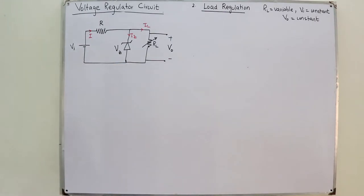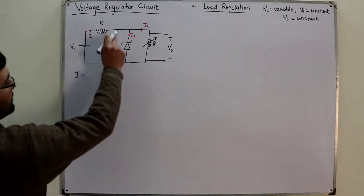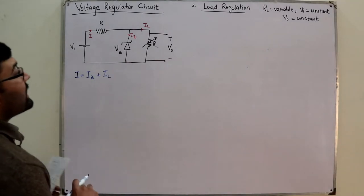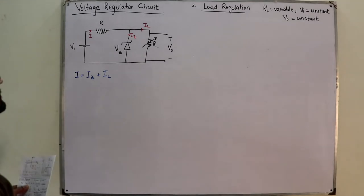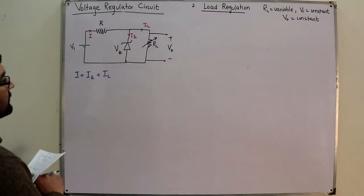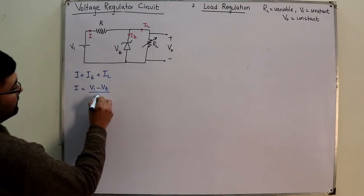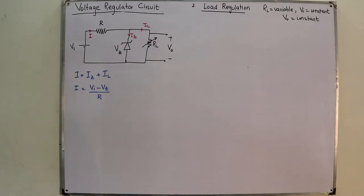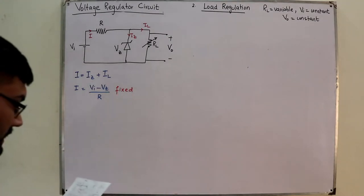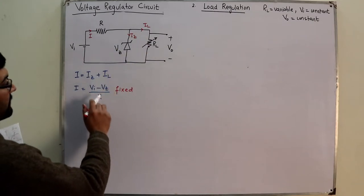The input current I equals IZ plus IL. This current I is fixed because I = (VI − VZ) / R. Since VI, VZ, and R are all constant, I is a fixed current — it does not vary. Now, if I is fixed and IL is variable, then IZ must also be variable.